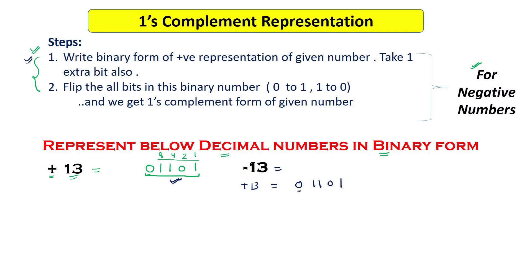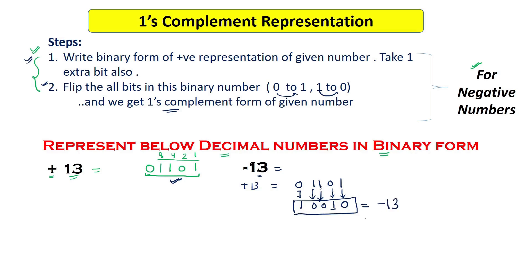The next step is to flip or invert all the bits in the binary number — convert 0 to 1 and 1 to 0. So 01101 becomes 10010. We have inverted all bits: the 0 becomes 1 and all the 1s become 0s. This result, 10010, is the one's complement representation of minus 13.